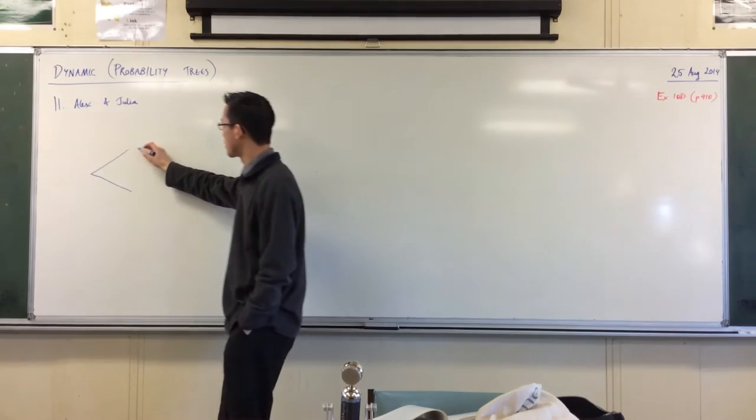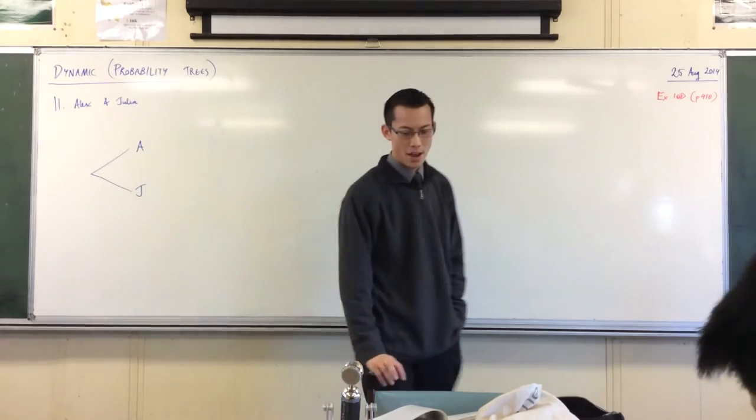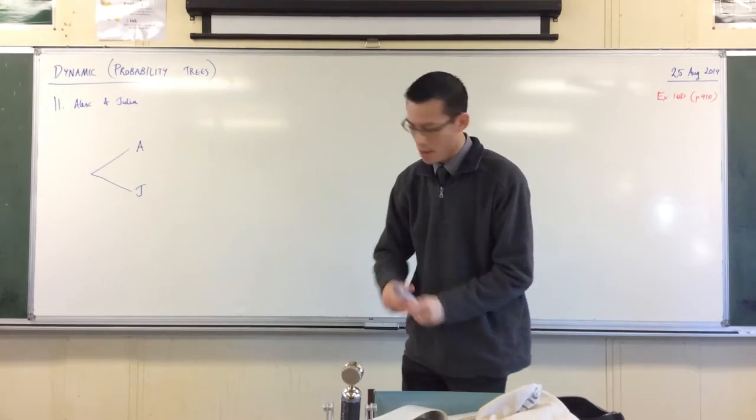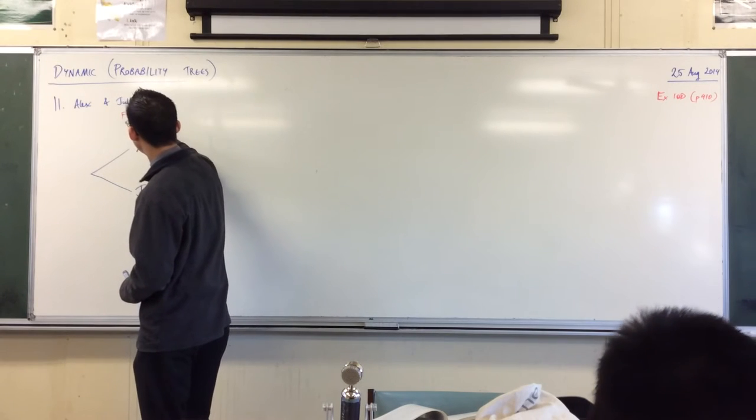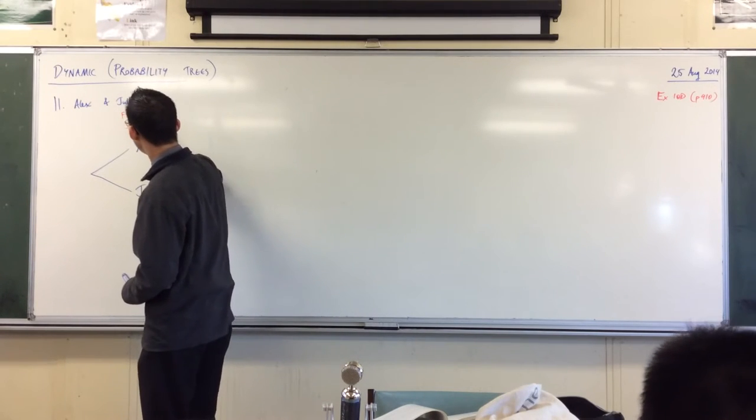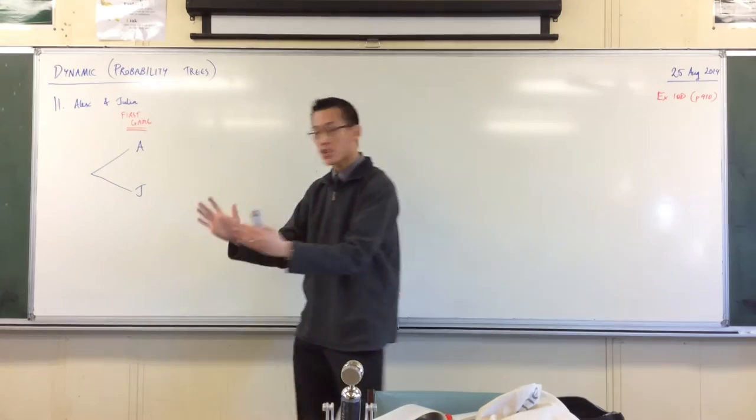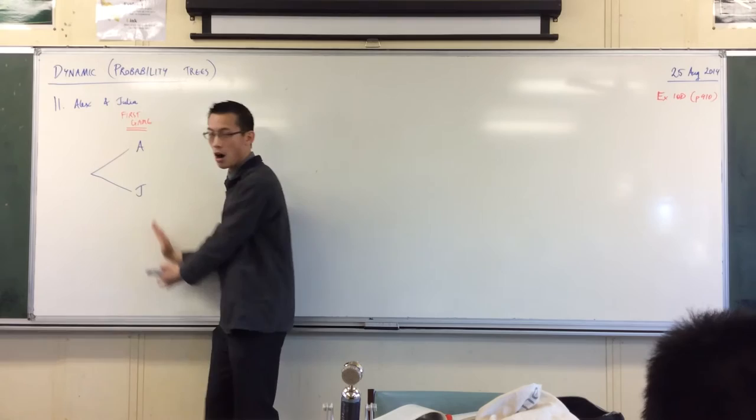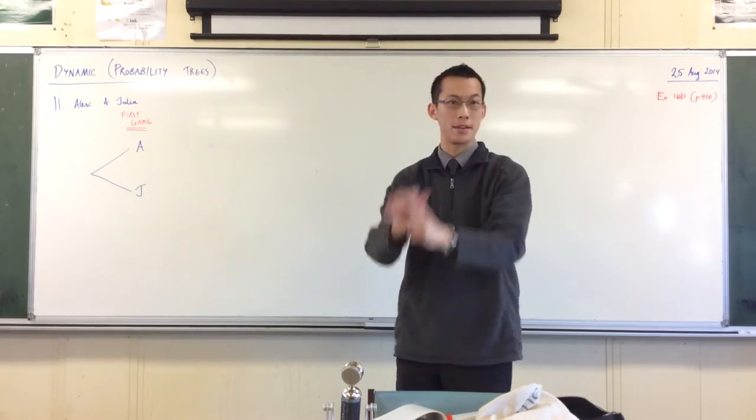So we've got two alternatives. Alex wins or Julia wins. This is the first game. Maybe you want to label this as such. First game. I always put my headings up the top because in a probability tree, a column of events represents one single thing happening, but they're different alternatives within that thing.